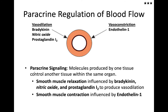We can also control blood flow on a local area through the release of paracrine signaling molecules. These are chemical messengers produced by the endothelial cells — this black line here represents your endothelial cells. They release things into the cell environment, including nitric oxide, bradykinin, prostaglandin, and endothelin, which control the constriction or relaxation of the smooth muscles.